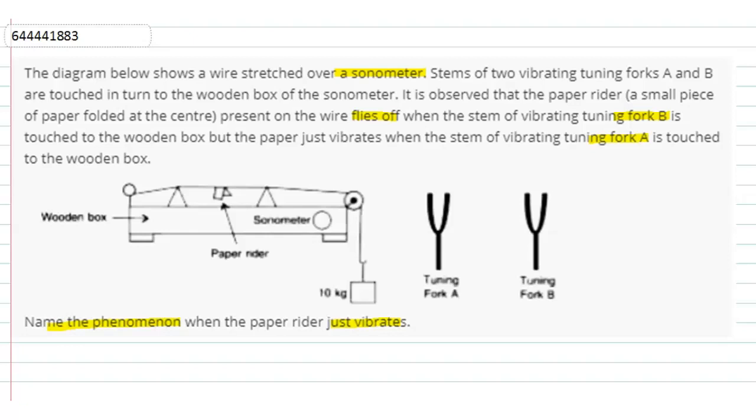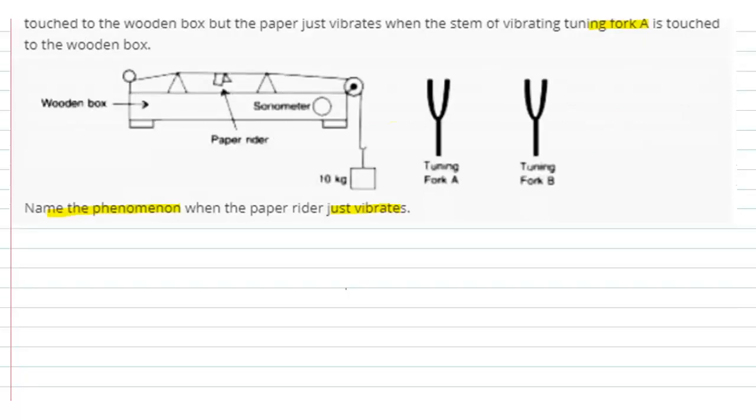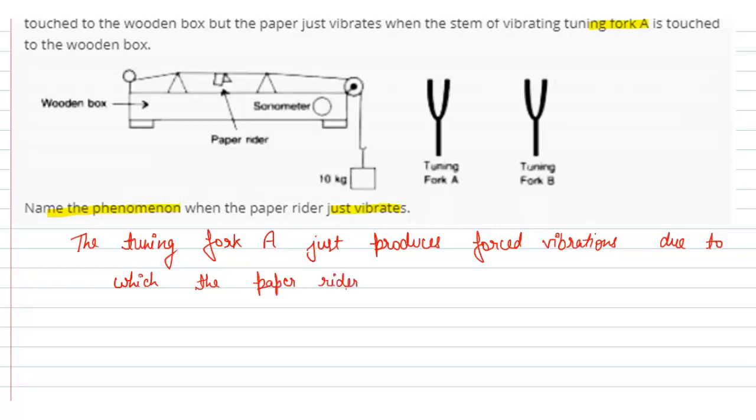So the answer is, the tuning fork A just produces forced vibrations due to which the paper rider just vibrates.